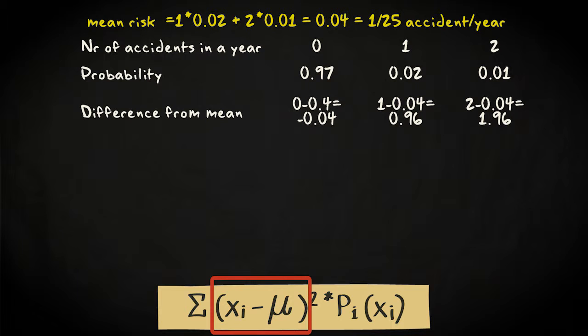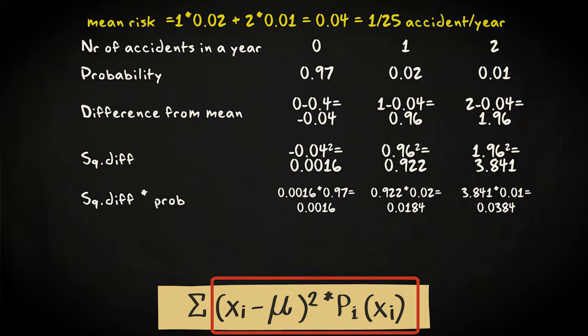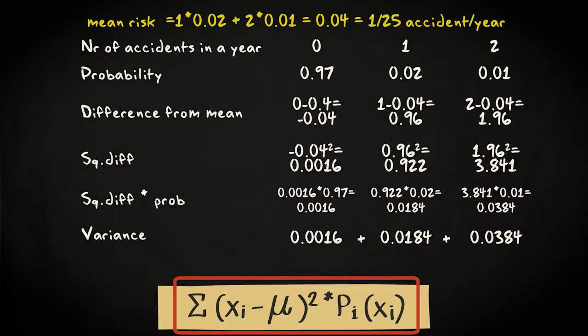First you calculate the difference between the mean and each number of accidents, then you square these differences, multiply them with the corresponding probabilities, and finally sum the result. The variance of the accident risk appears to be approximately 0.06.